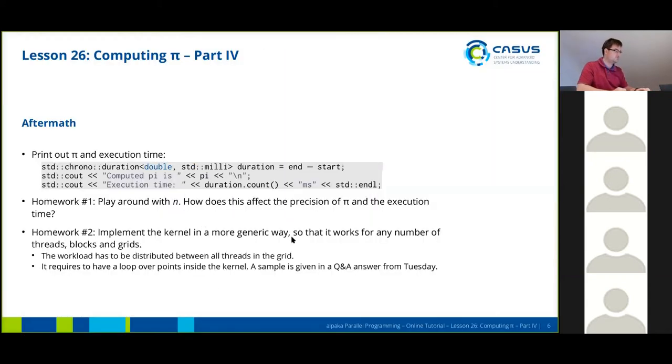As homework you can try to play around with the n value. It's defined in the source code as a constant and you can look at how this affects the precision of our approximated pi and also the execution time.